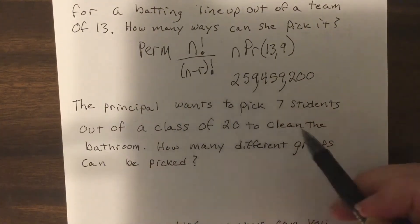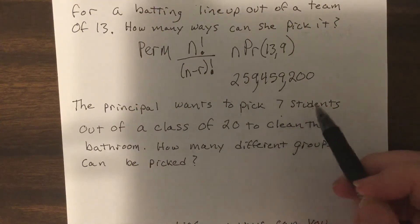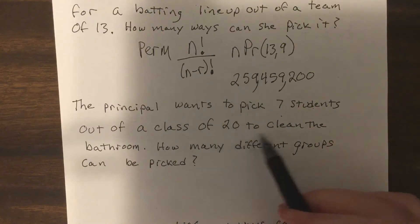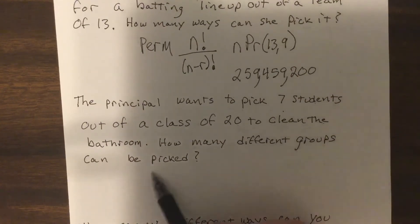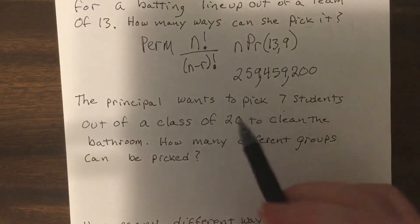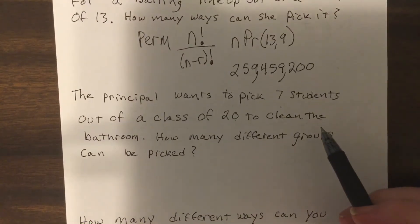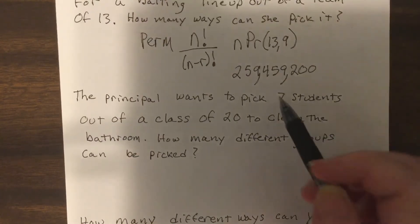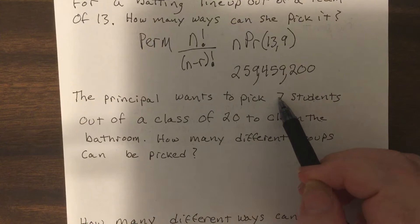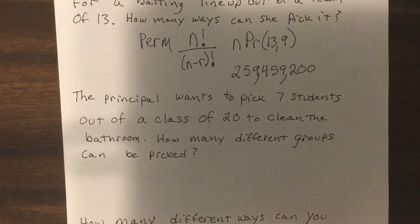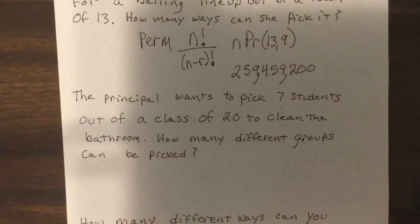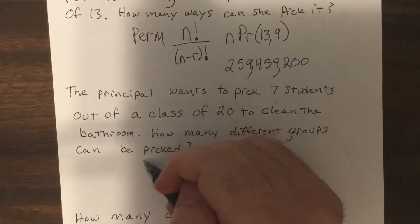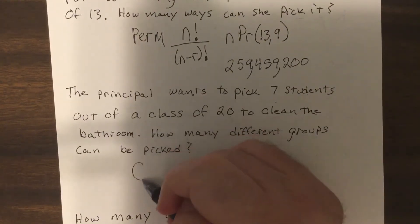Next problem: a principal wants to pick seven students out of a class of 20 to clean the bathroom. How many different groups can be picked? Notice order doesn't matter here — if they'd specified who does which bathroom it would be different — so this is a combination.